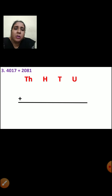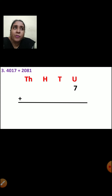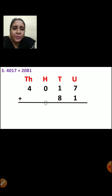Now next question. The question is 4017 plus 2081. First you are going to write the place: units, tens, hundreds, thousands. Now 7 will come in units place, 1 will come in tens place, 0 will come in hundreds place, and 4 will come in thousands place. For the next number: 1 will come in units place, 8 will come in tens place, 0 will come in hundreds place, and 2 will come in thousands place.